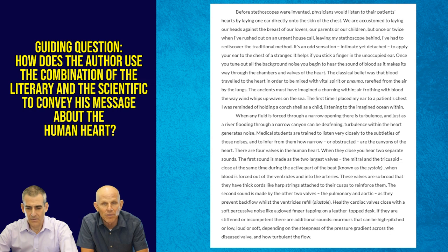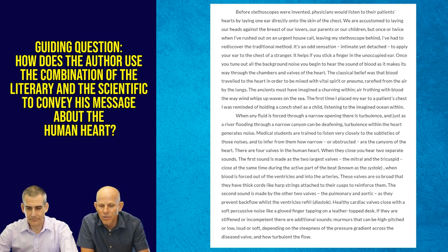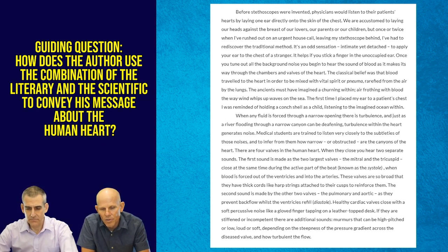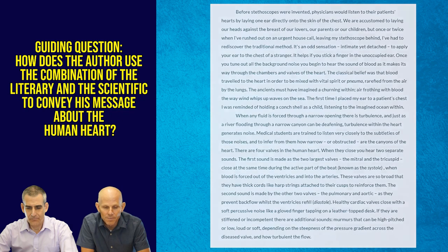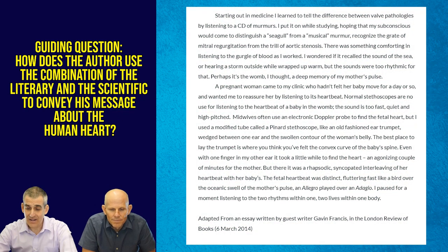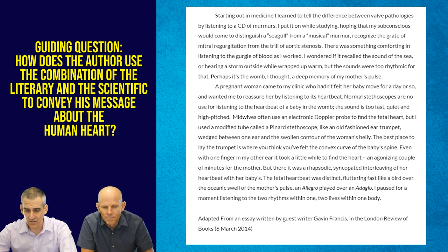There are four valves in the human heart. When they close, you hear two separate sounds. The first sound is made as the two largest valves — the mitral and the tricuspid — close at the same time during the active part of the beat, known as the systole, when blood is forced out of the ventricles and into the arteries. These valves are so broad that they have thick cords, like harp strings, attached to their cusps to reinforce them. The second sound is made by the pulmonary and the aortic as they prevent backflow whilst the ventricles refill — diastole.